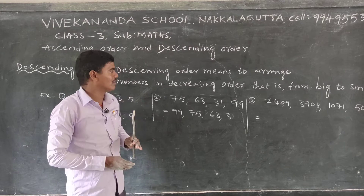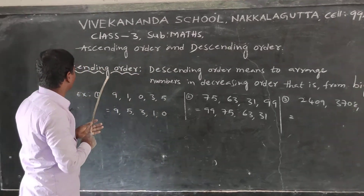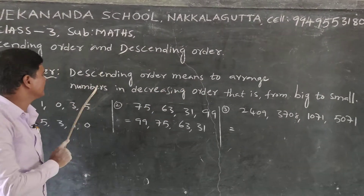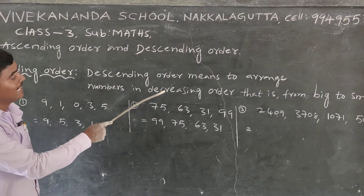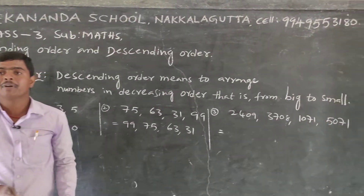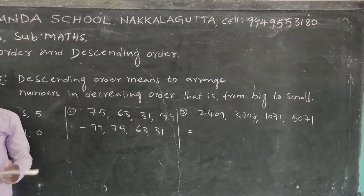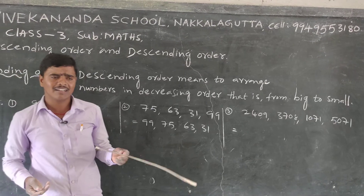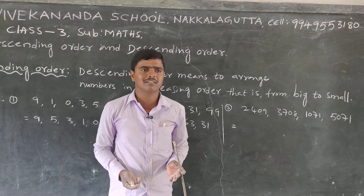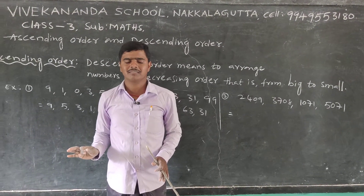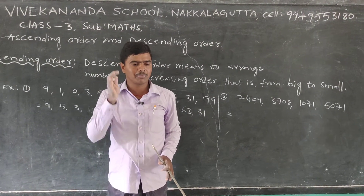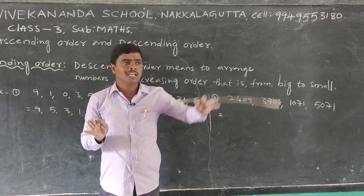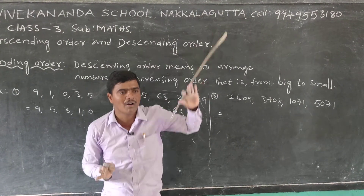What is the descending order? Descending order means to arrange numbers from big to small. Big to small — keep this in your mind. What is descending order? Big to small.